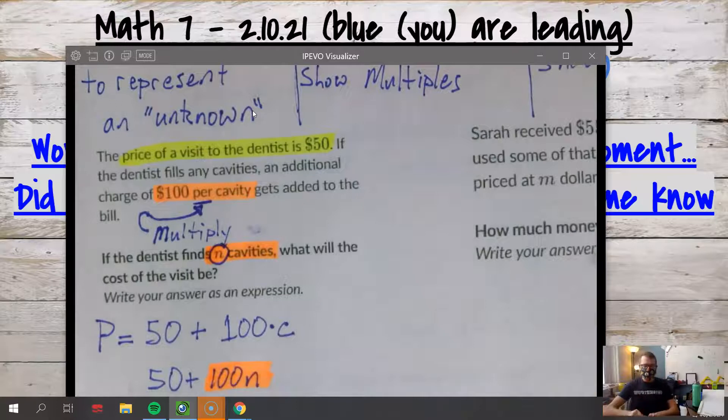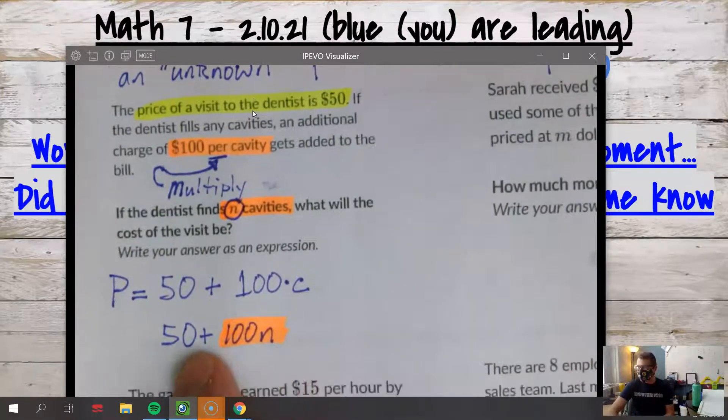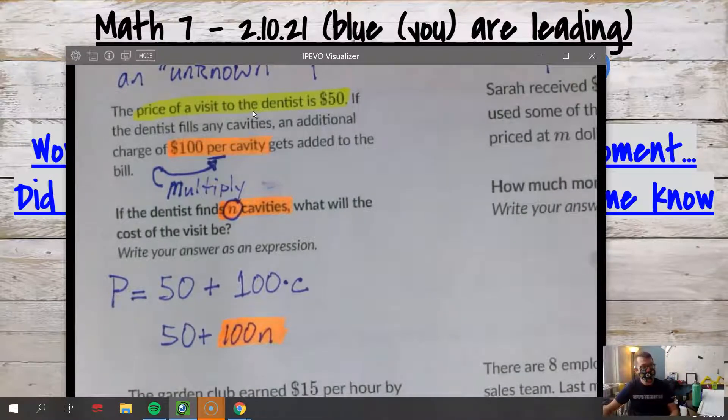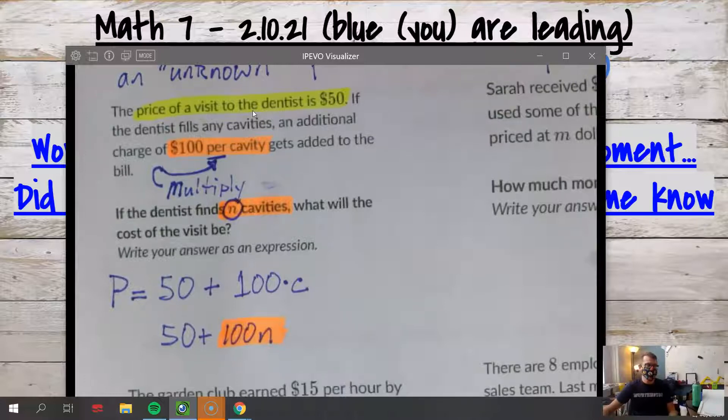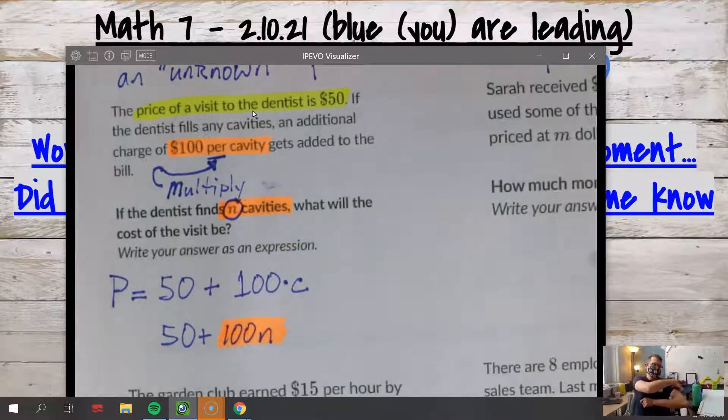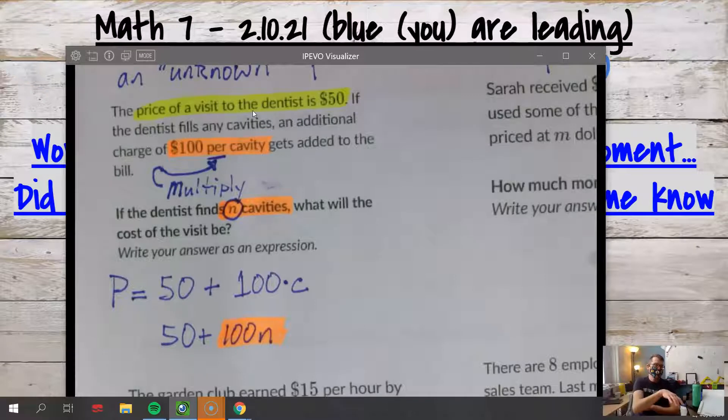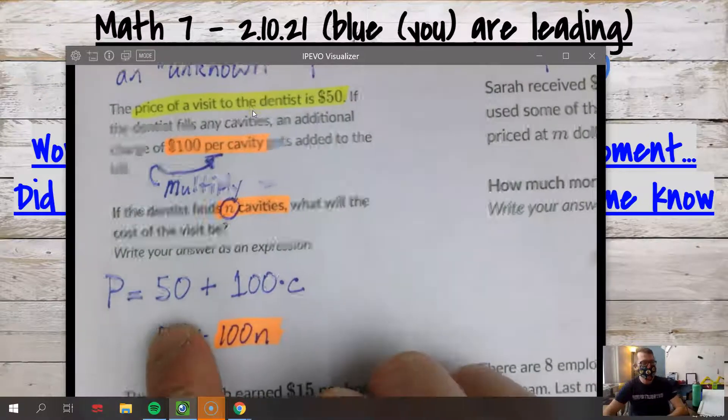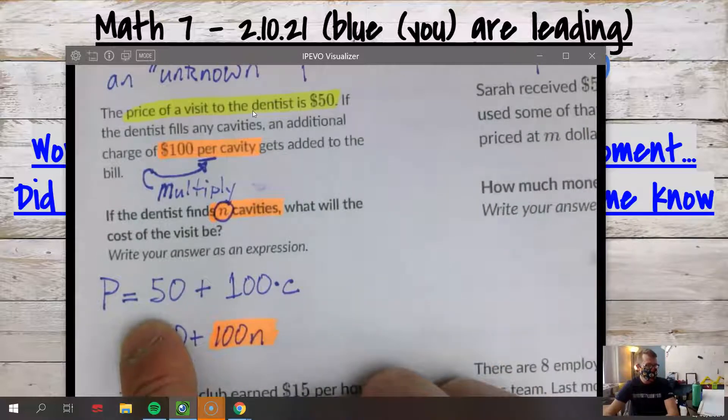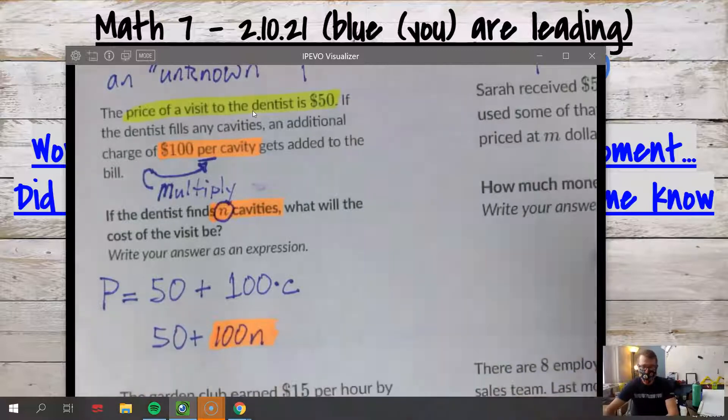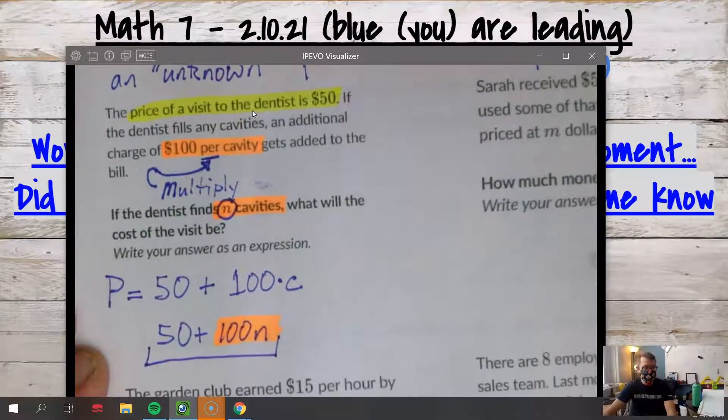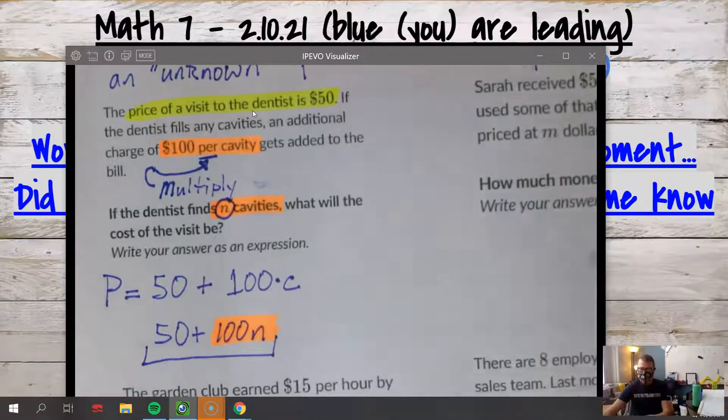So we would say times the number of cavities. Now hold on, they say to use n though. So if we were doing this in Khan, even though my brain says 'Oh, I'm gonna use c for cavities,' no. If Khan says use n, we would want to say 50 plus 100n. Does that make sense? Because they told me n cavities - that's the variable that I want to use instead of using c.